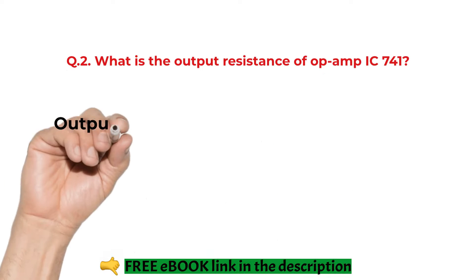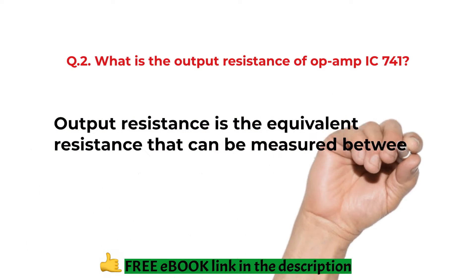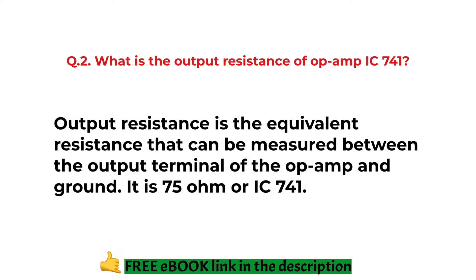What is the output resistance of op-amp IC741? Output resistance is the equivalent resistance that can be measured between the output terminal of the op-amp and ground. It is 75 ohm.